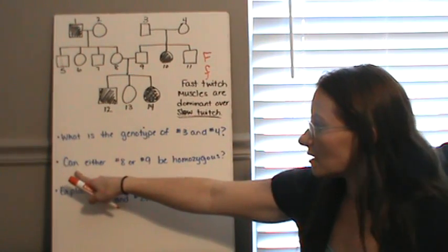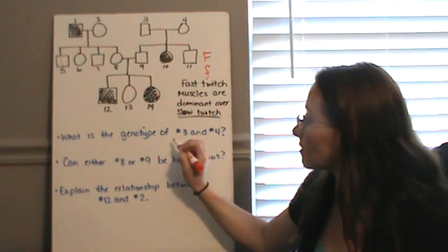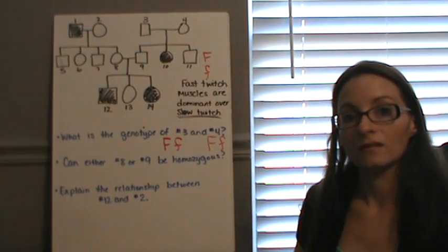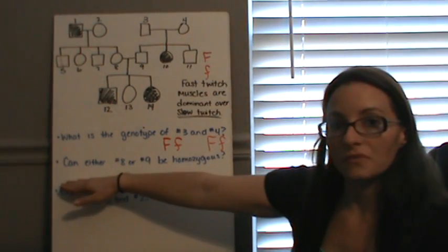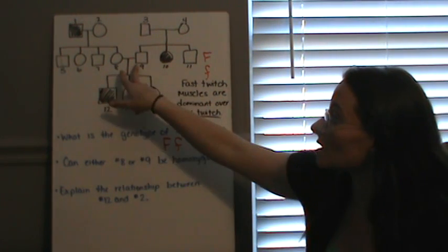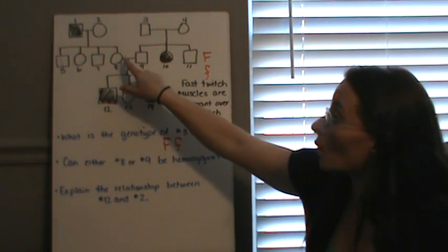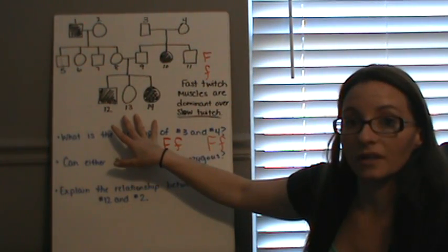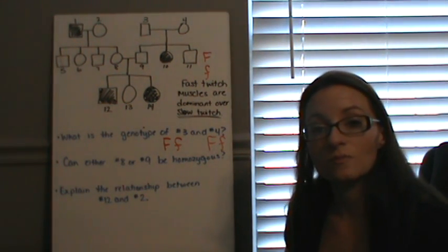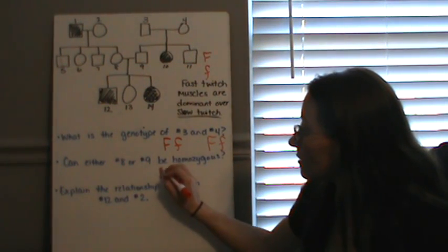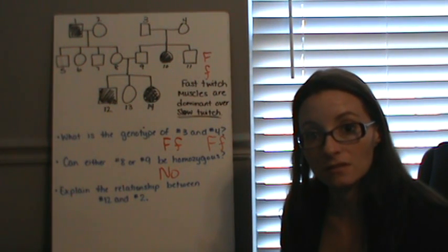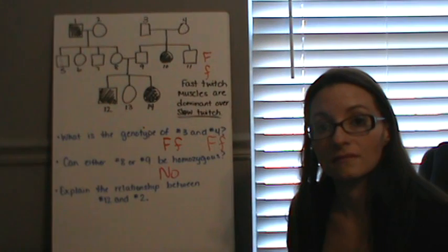So the genotypes of 3 and 4: number 3 is definitely going to be big F, little f, and number 4 is going to be big F, little f also. The next question reads: can either 8 or 9 be homozygous? We're looking at whether they're going to be big F, big F, or big F, little f. We can't tell from them alone, so we have to look at their offspring. Some of their offspring show little f, little f, which means neither one of them can be homozygous — they both have to be heterozygous to be able to pass on the slow twitch alleles.